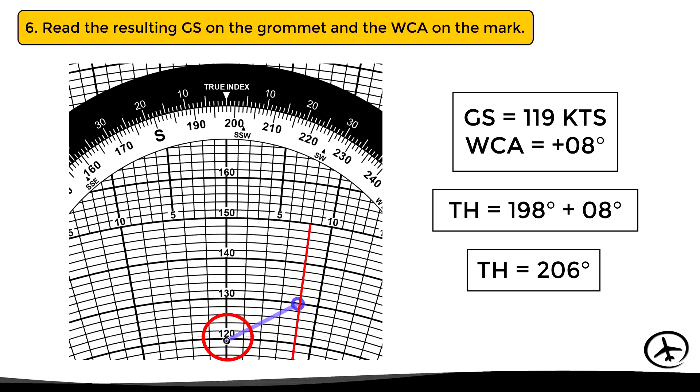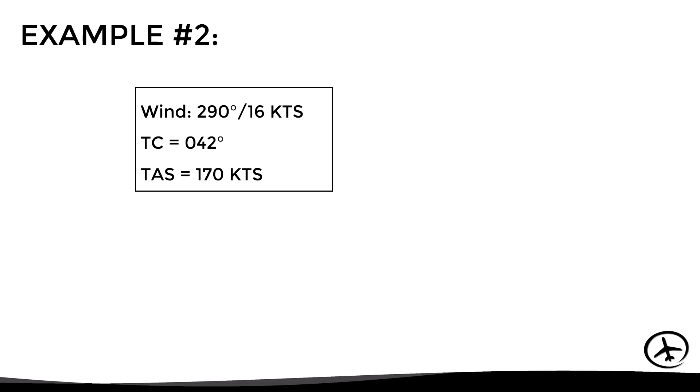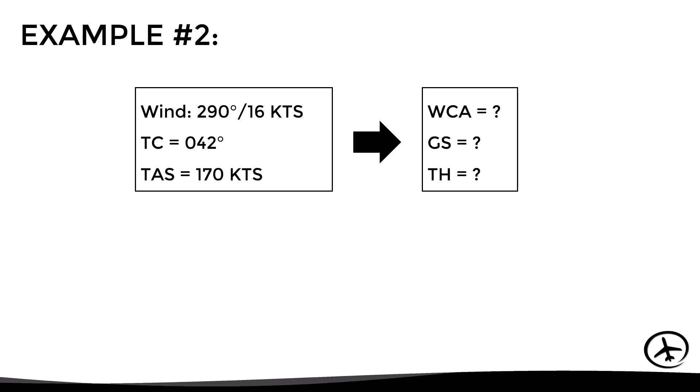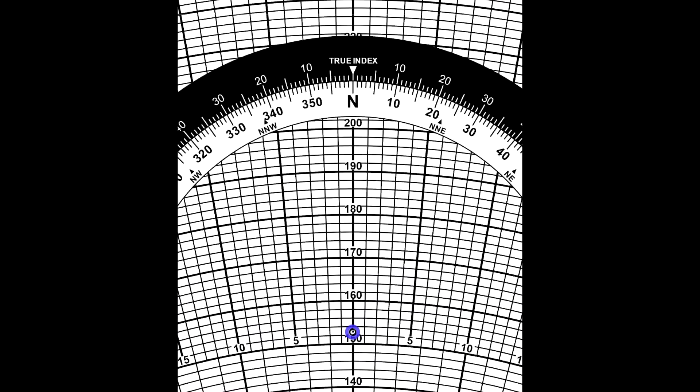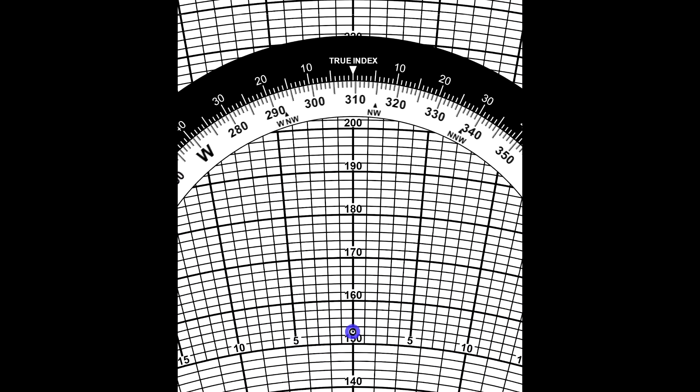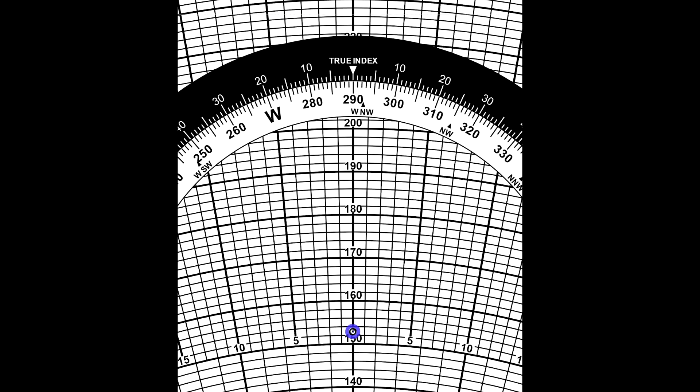If the procedure is not clear yet, let's look at another example using a dynamic animation of the flight computer. For this example, we assume a wind of 290 degrees at 16 knots, a true course of 042 degrees, and a true airspeed of 170 knots. We need to determine the wind correction angle, true heading, and ground speed. The first step is to align the wind direction, which in this case is 290, with the true index.